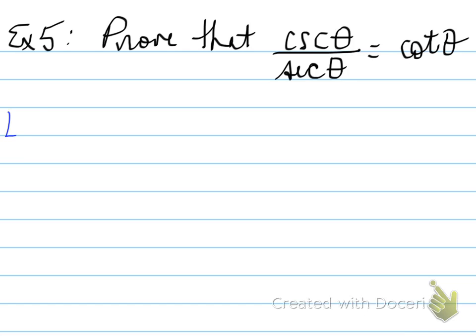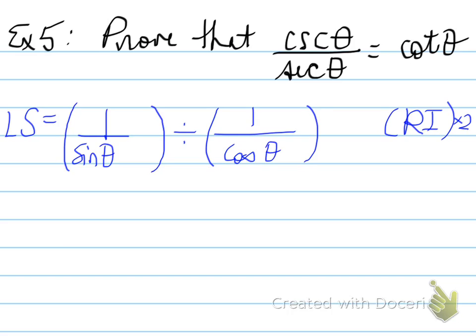Cosecant theta over secant theta should be manipulated using reciprocal identity as one over sine theta. That is cosecant theta. And we're going to change that divisor line, folks, because what we'll have is a fraction over a fraction, and that becomes really difficult to work with. So what you can do is change this expression to cosecant theta divided by secant theta, so that you have one over sine theta divided by one over cos theta.